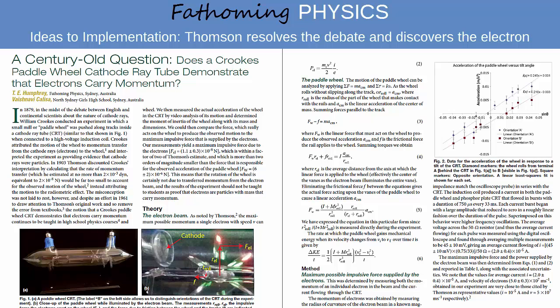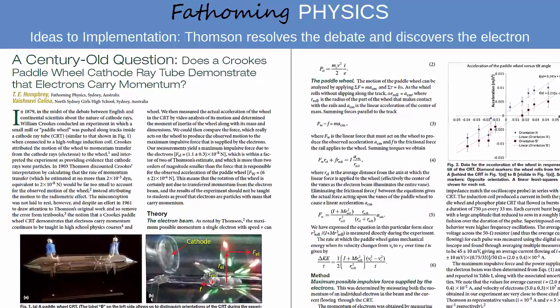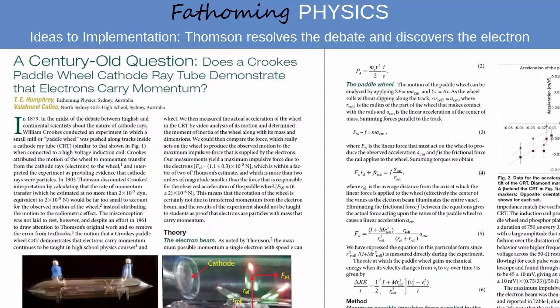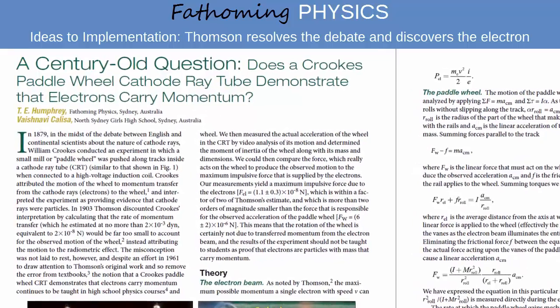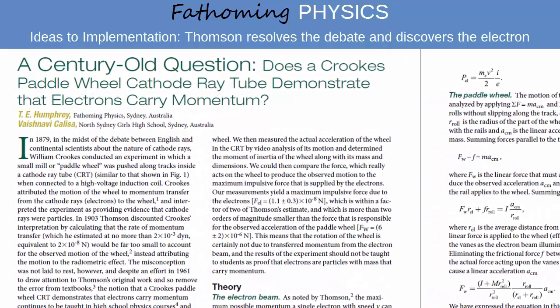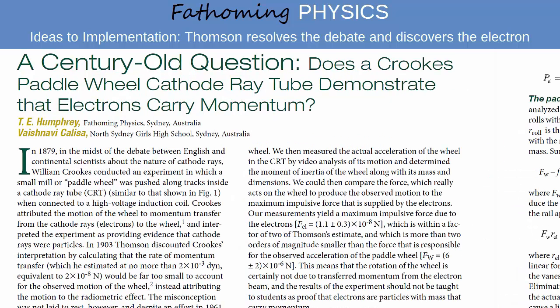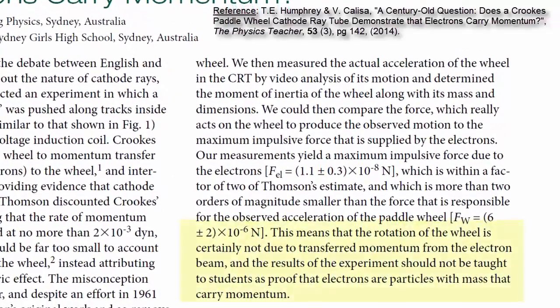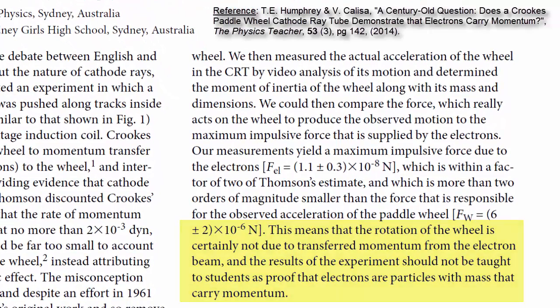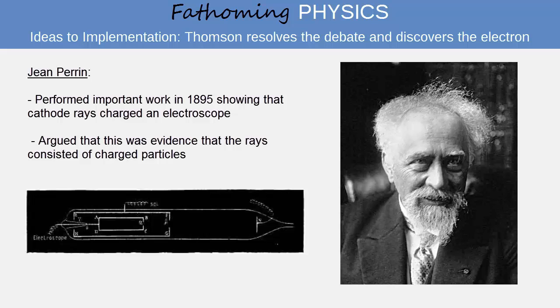In 2014, a student and I checked J.J. Thomson's calculations experimentally, and we found that, in fact, the electrons in cathode rays have less than 1% of the momentum that would be required to account for the rotation of the wheel in terms of the impact of particles. Our results were published in the journal The Physics Teacher, and a PDF copy is available on this website. The upshot is that even though cathode rays are electrons, which do carry momentum, the paddle wheel cathode ray tube doesn't establish that they carry momentum.